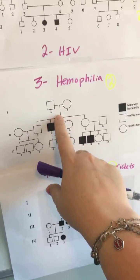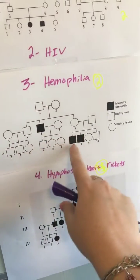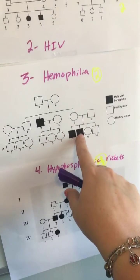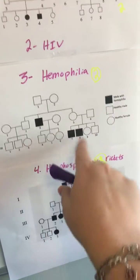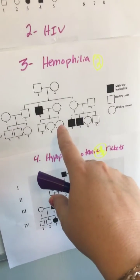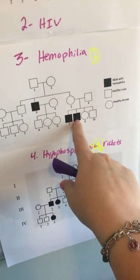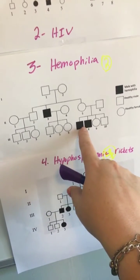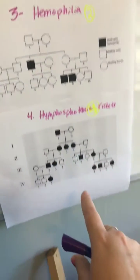Looking at the third pedigree from the bottom, we don't have parents that have it but the kids do — a kid has it and the parents do not. So again that tells you it's going to be recessive. And this one happens to affect only males, so that one is going to be X-linked recessive.